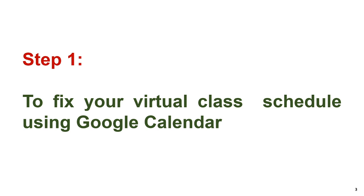What is our first step? The first step — we need to create a schedule for our class. The schedule creation is done with the help of Google Calendar. In Google Calendar, you need to create your class: what time your class is going to start, what time it will finish, and what is the date — for one month, two months, three months, or one year. According to your schedule, you prepare it and put it into Google Calendar. Once you enter the schedule, Google Calendar will automatically fetch the date and show it to you and to your students as well.